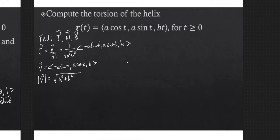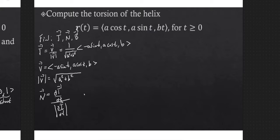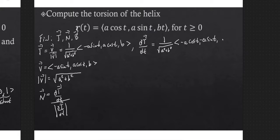Now let's remember how to calculate n. We have t — that's great. Remember that n is the derivative of the unit tangent vector, but normalized to unit length: n = (dT/dt) / |dT/dt|. Or if we're doing arc length parameterization, we could do (1/κ)(dT/ds). So let's calculate the derivative of the unit tangent vector. dT/dt — with respect to our parameter t — will still have the factor 1/√(a² + b²), and the derivative gives (−a cos t, −a sin t, 0).